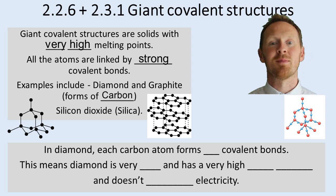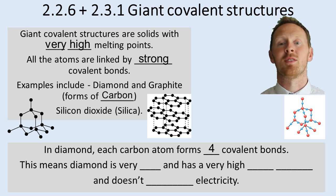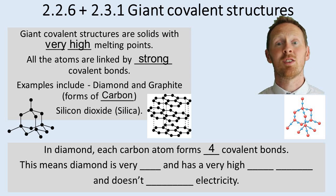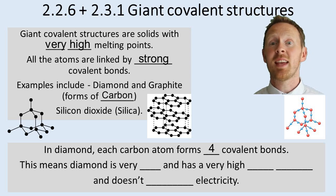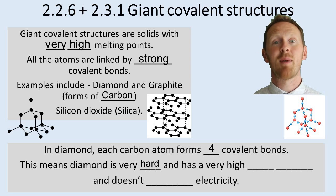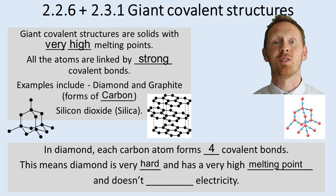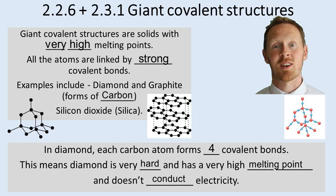Let's focus on diamond. Each carbon atom forms four covalent bonds — that means each carbon atom shares its four electrons with four other carbon atoms. It's got no delocalised electrons. This means diamond is very hard, because it's got four strong covalent bonds. It has a very high melting point because of those four strong covalent bonds, and it doesn't conduct electricity because it has no charge-carrying particles — no delocalised electrons and no ions.